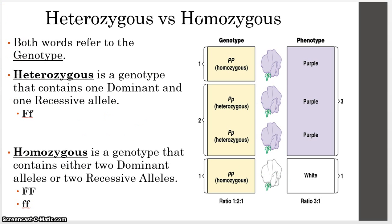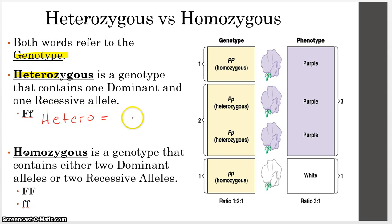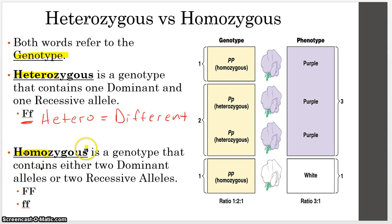The next two words are heterozygous and homozygous — both referring to the genotype. Heterozygous is a genotype that contains one dominant and one recessive allele. The prefix 'hetero' means different, so the two letters are different. Homozygous genotypes have two alleles that are exactly the same — either two dominants or two recessives. That shouldn't surprise us, since the prefix 'homo' means same.